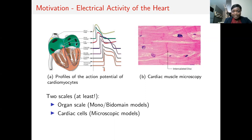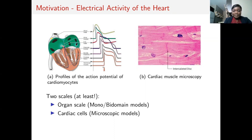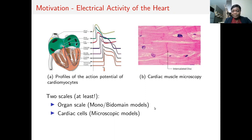The study of this electrical activity can be done at least at two scales. At the organ scale, we have the so-called mono and bidomain models that are based on the homogenization of the cardiac tissue. The second scale is at the cardiac cell level, where we have the microscopic models that give a more detailed representation of the properties of the cardiac cells. In my talk, my focus will be on the microscopic models.